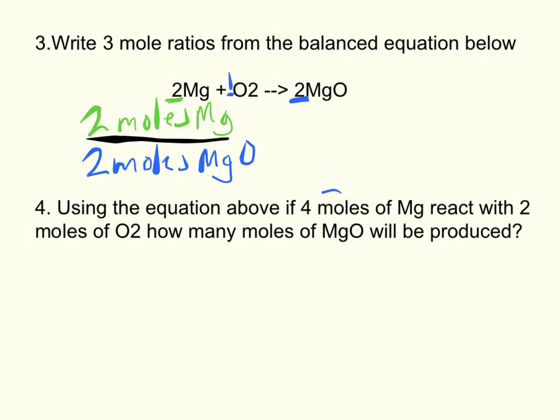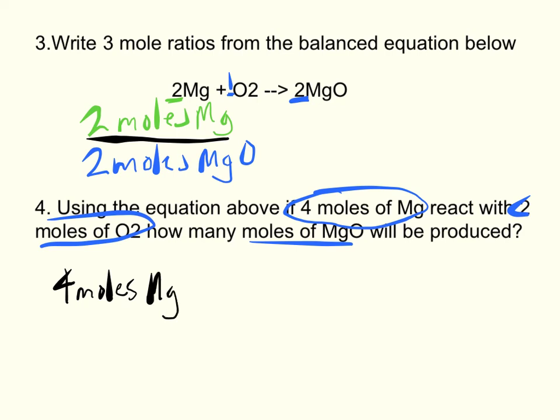For number four, if four moles of Mg react with two moles of O2, how many moles of MgO will be produced? Your given is four moles of Mg, or you could do O2.